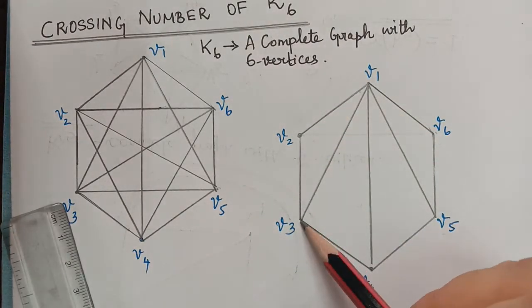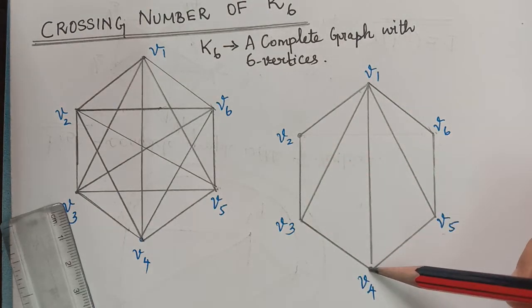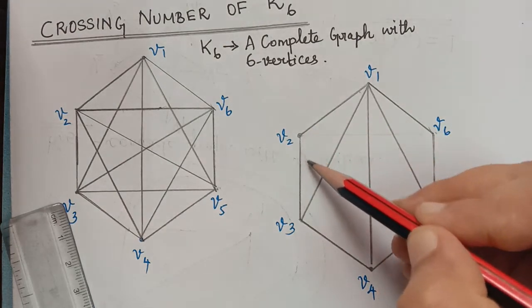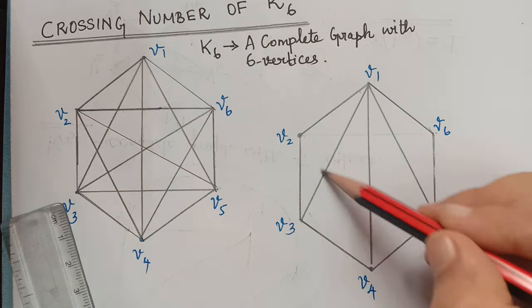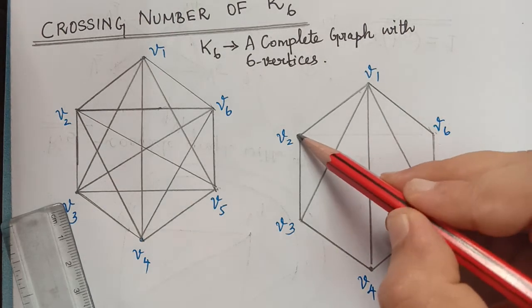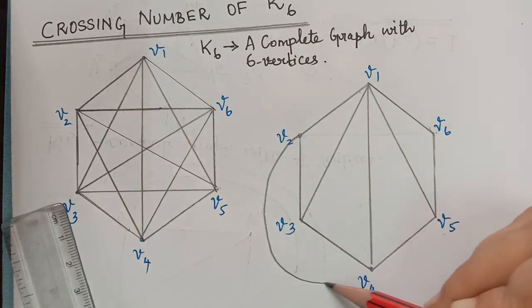Similarly, V2 with V3, V4. Now that edge if we draw like this, there will be a crossing here. So in order to avoid it, we can draw that edge in this way.